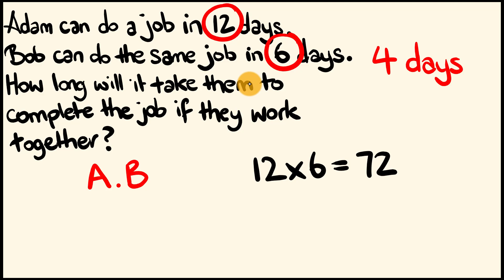The next thing we're going to do is we're going to get the number of days that Adam takes and we're going to add it to the number of days that Bob takes. So, nice and simple once again. That's 12 plus 6. 12 plus 6 is equal to 18.